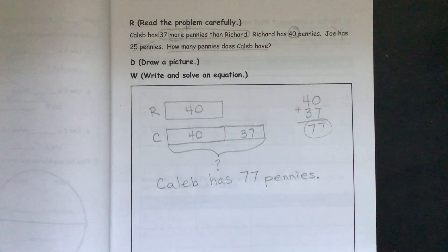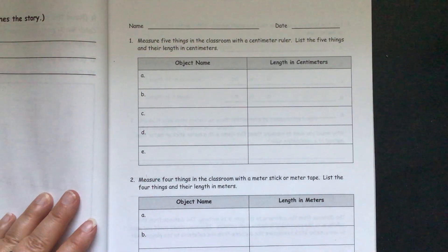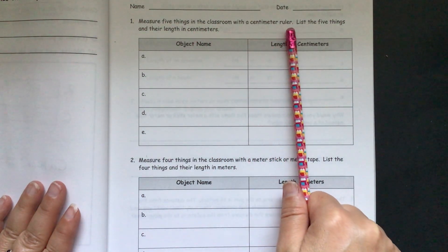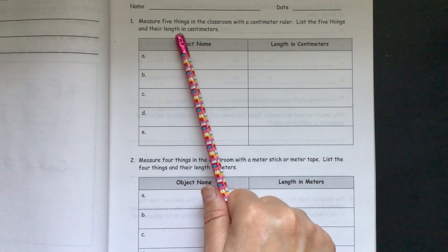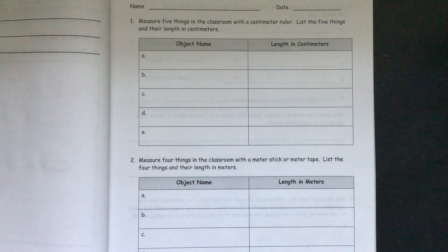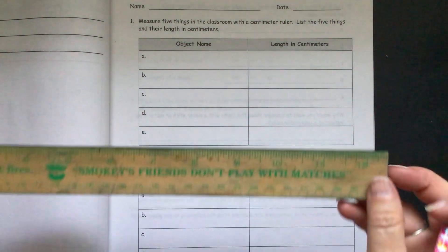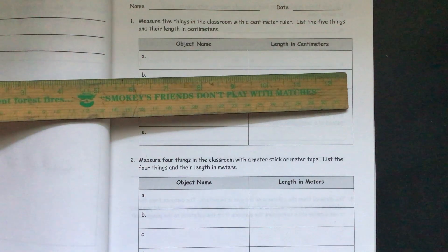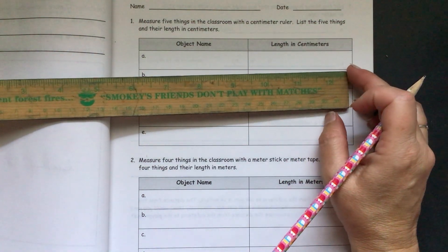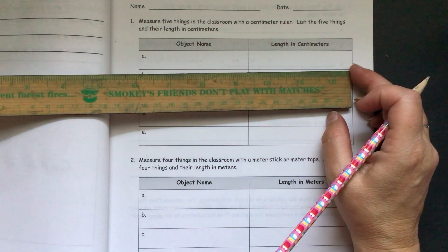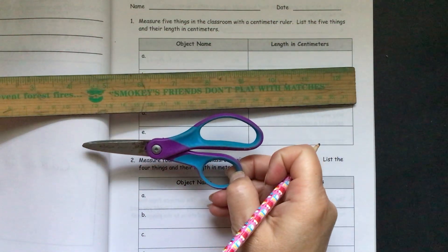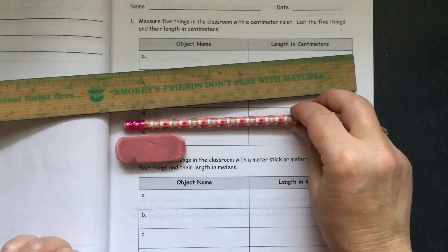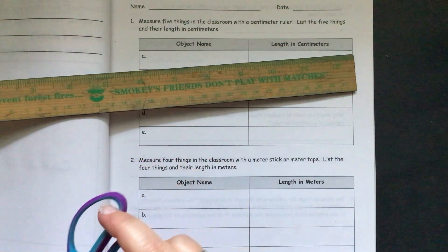We'll move on to our problem set. The directions are: measure five things in the classroom with a centimeter ruler and list the five things and their length in centimeters. You will need your centimeter ruler — remember you have to use the centimeters, the ones that are about a pinky space away. It's probably a good idea to measure small things, like a pair of scissors, an eraser, or a pencil.